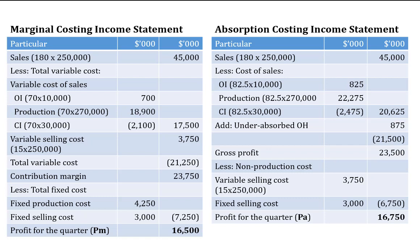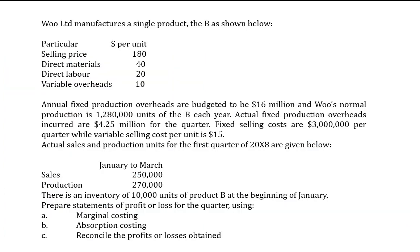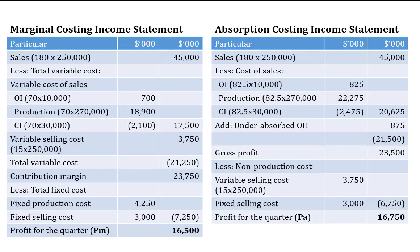We have not yet added the variable costs not related to production. From the question, the variable selling cost is $15 per unit. Since these are variable costs, we take $15 × 250,000 units sold and obtain the variable selling cost figure.